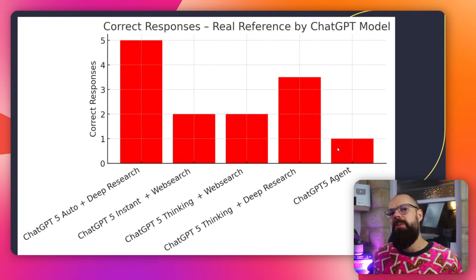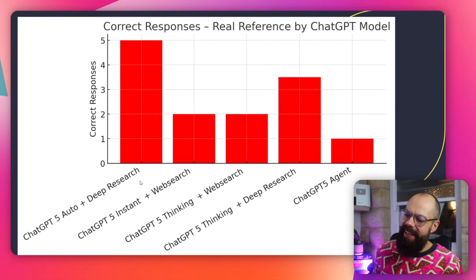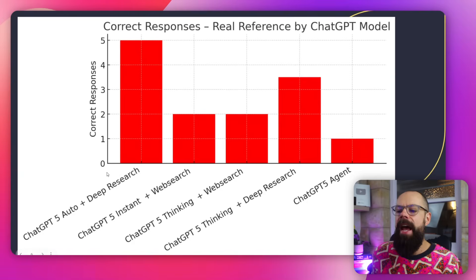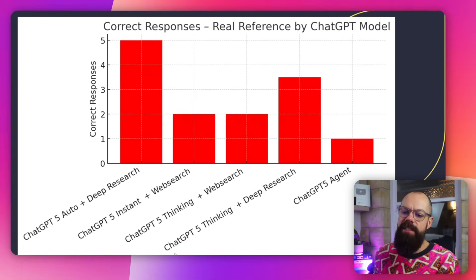ChatGPT 5 Agent wasn't very good — it only provided one real reference out of the five we randomly selected. Ultimately, you want to let ChatGPT choose the best model for you and always include deep research, not just web search, when looking for real references. That makes sense because deep research tries harder to find real results. The best model for references is ChatGPT 5 Auto plus deep research.